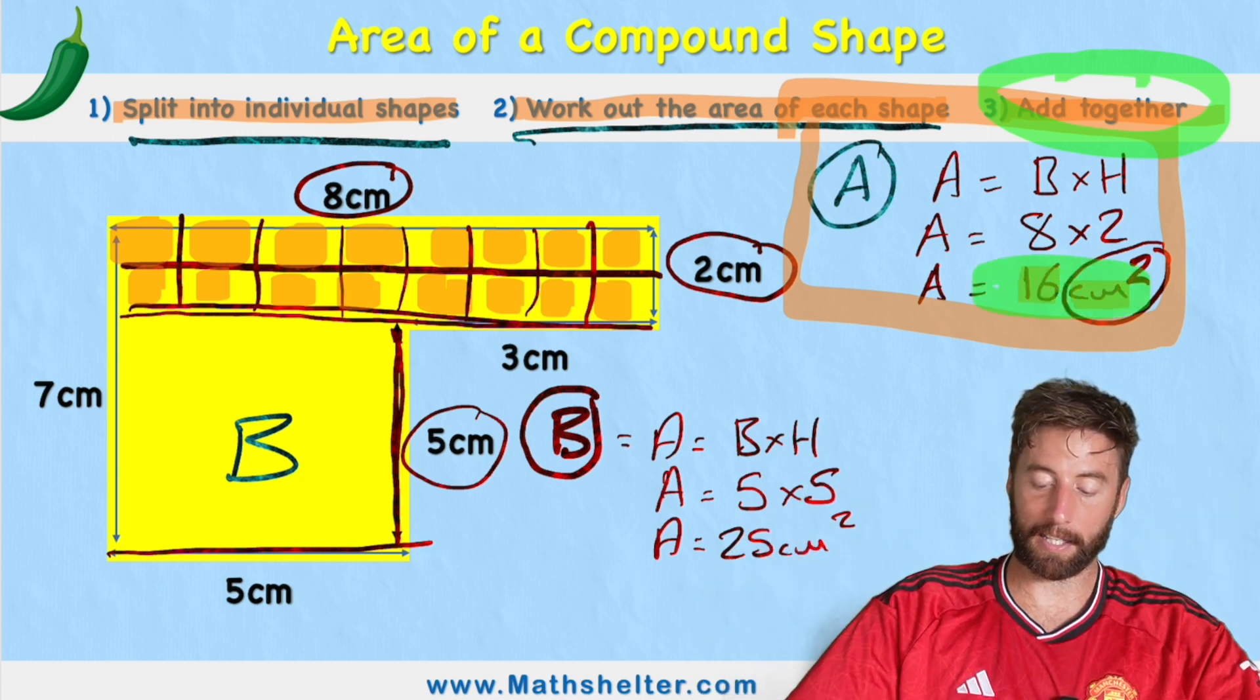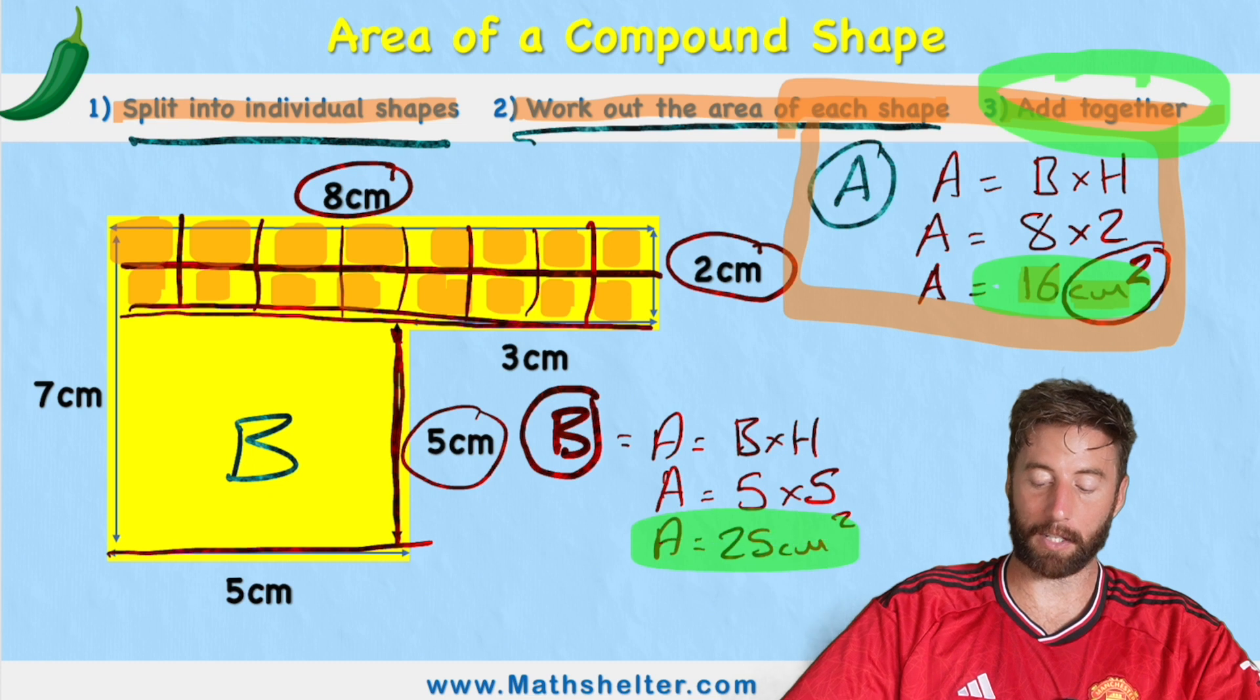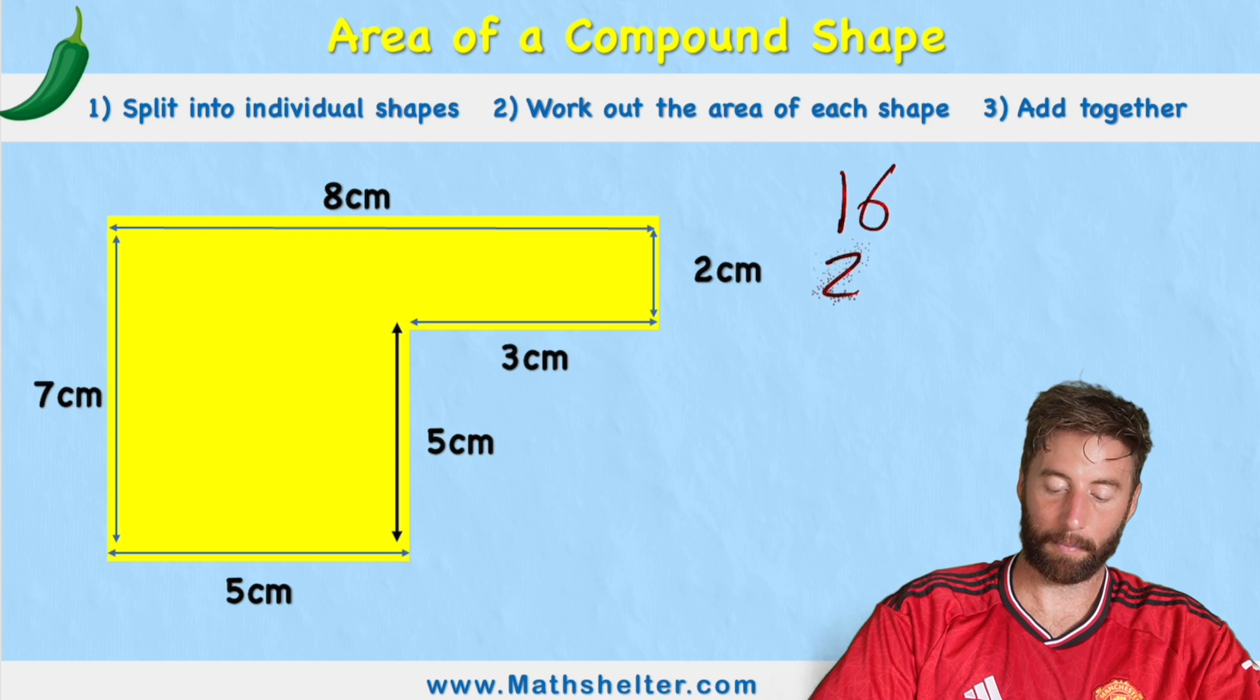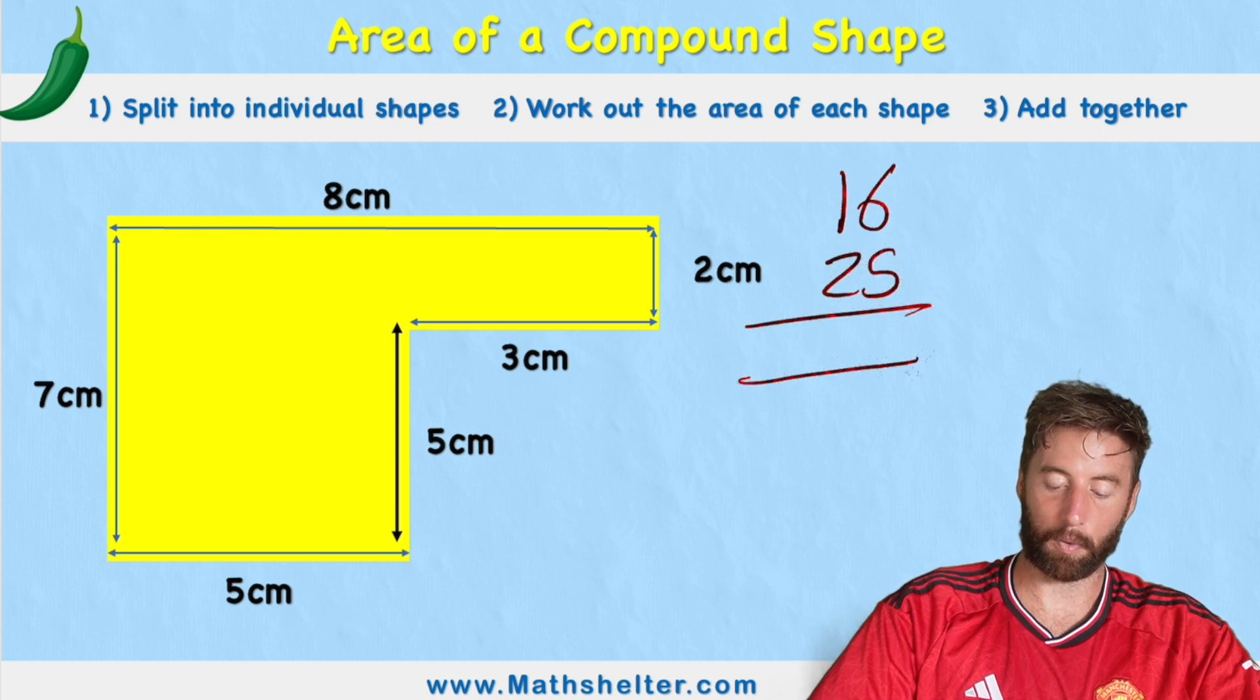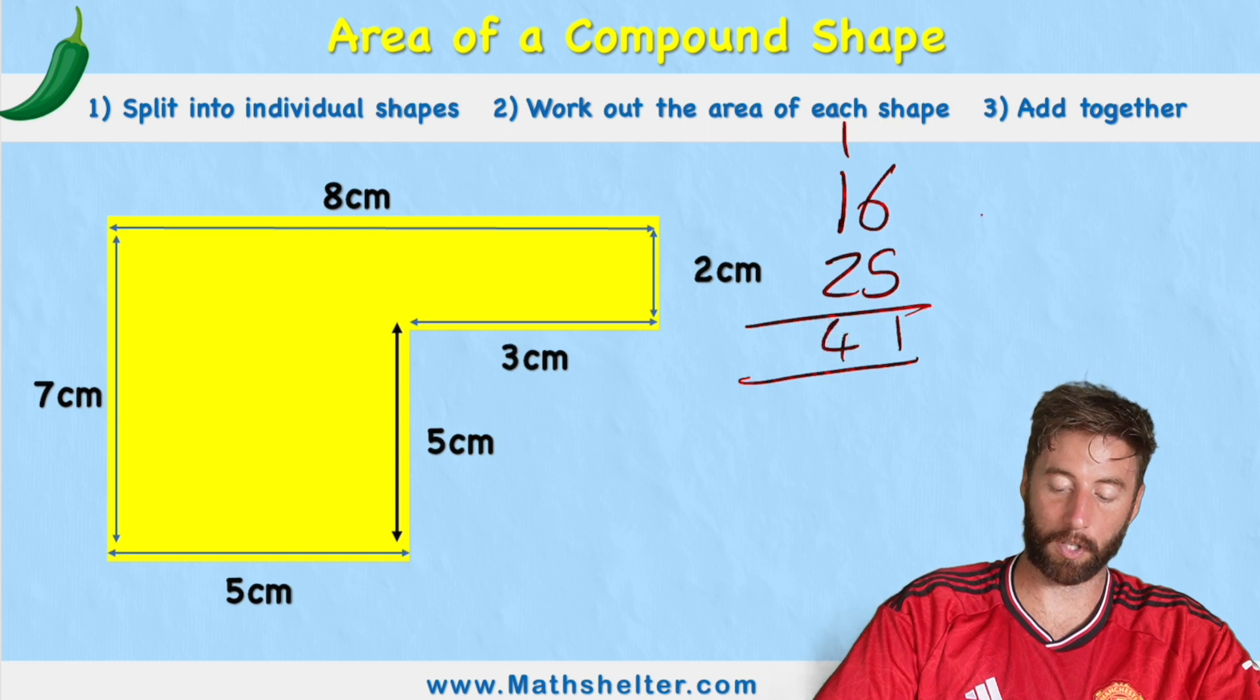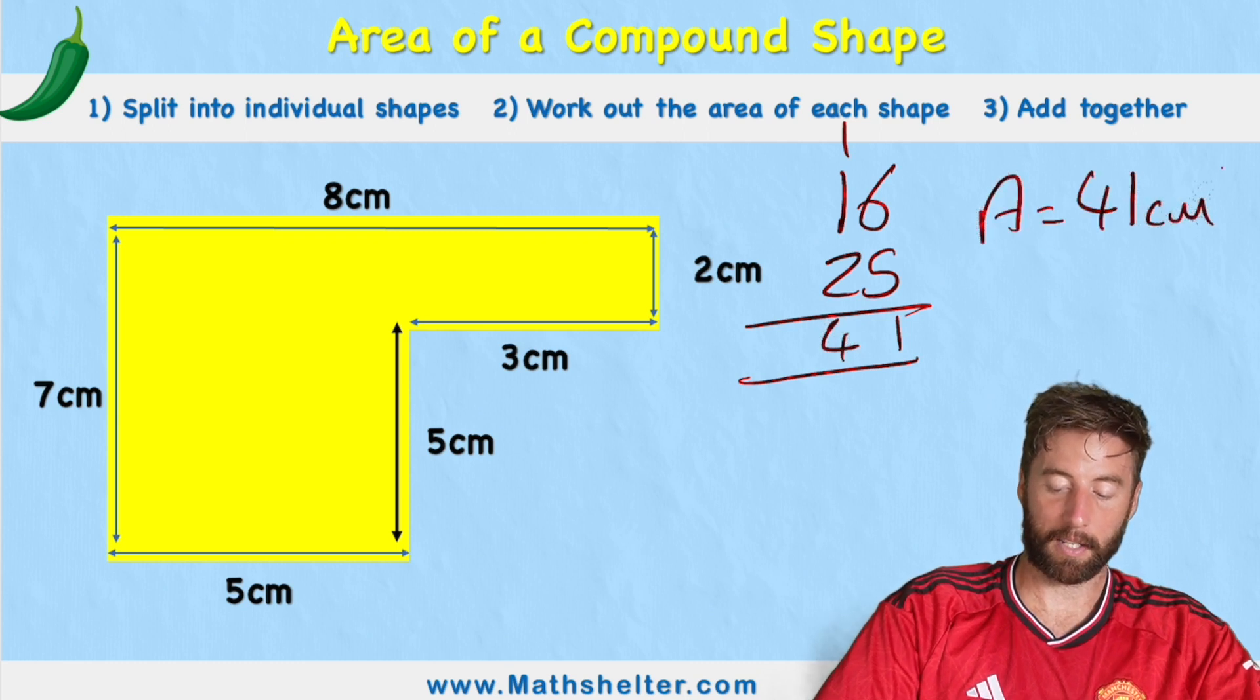So I'm going to get my 16 centimeters and add it to my 25 centimeters and I'm going to do that in column method. So 16 plus 25 equals, in the 1s, 6 plus 5 is 11 and then in my 10s 1 plus 1 is 2 plus the 2 is 4 so I have 41 centimeters squared.